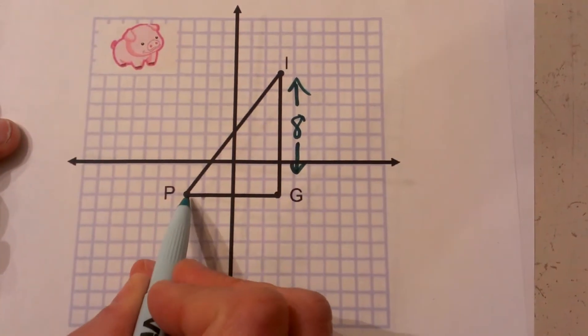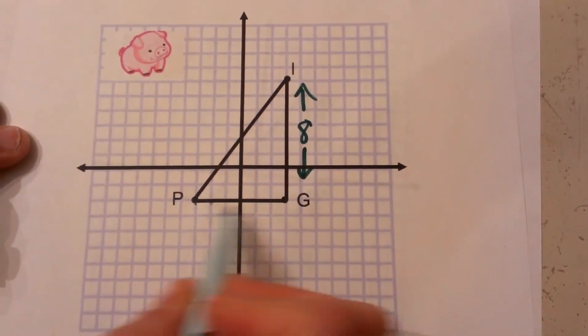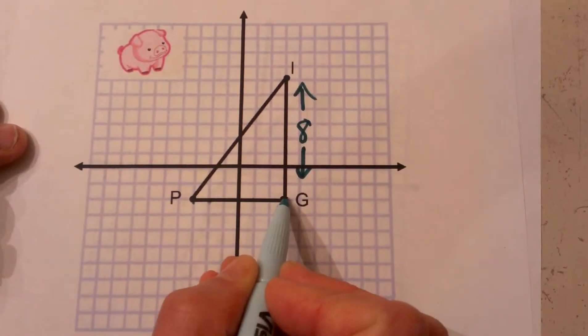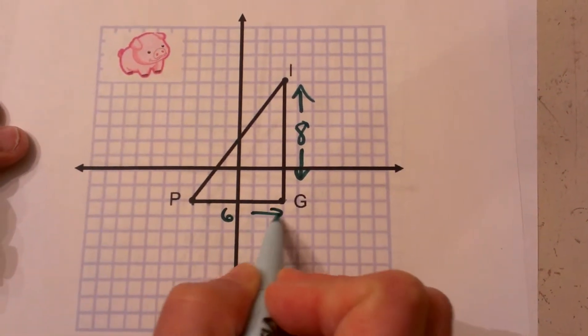Then I'm going to find the distance from P to G. Again, this is a vertical or horizontal line so it's nice and easy: 1, 2, 3, 4, 5, 6. So this side is 6.